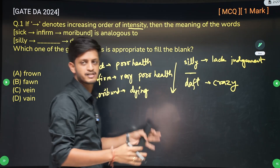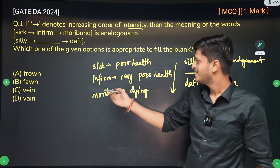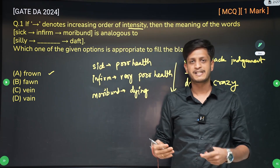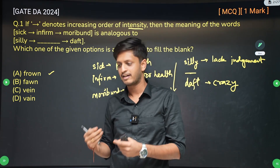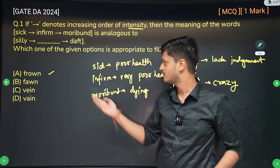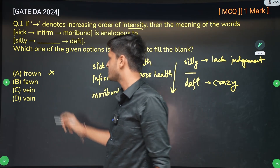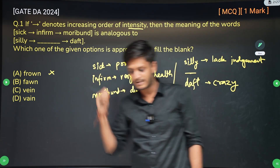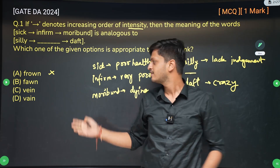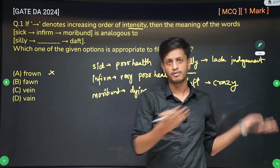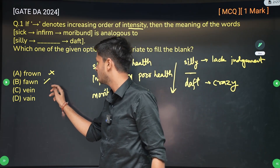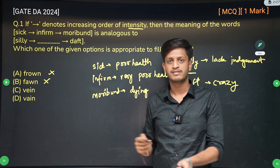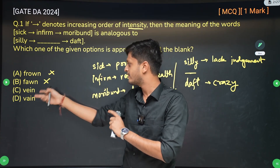The first option, frown — frowning upon means expressing displeasure, not liking something — so this doesn't make sense here. Fawn means expressing comfort or acceptance, so this is also not what we want. Vein with the letter E is a blood vessel, so that's not the correct answer either.